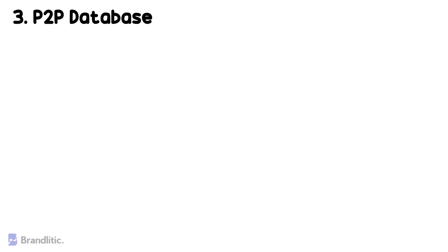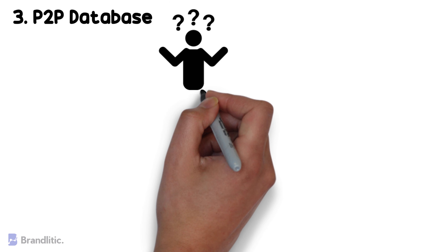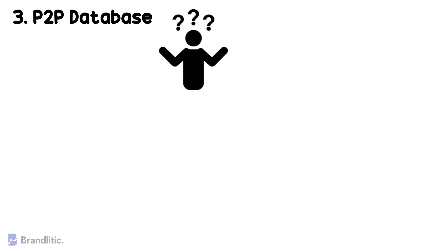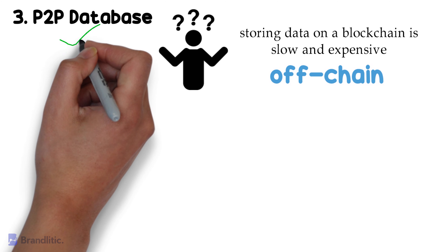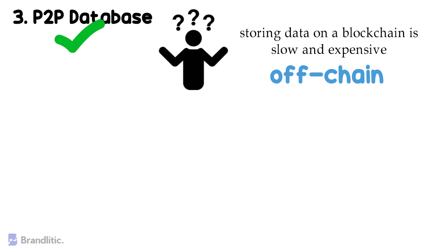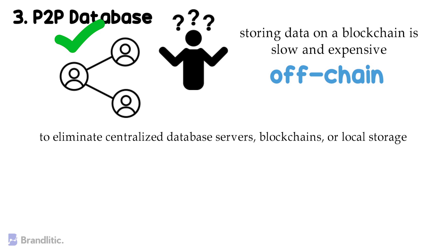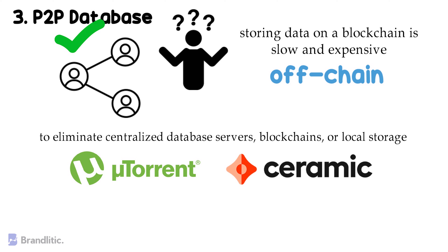Tech stack component #3: P2P Database. You might wonder why we need a database when we are using a blockchain. The simple answer is that storing data on a blockchain is slow and expensive, so we need an additional database to access data off-chain, ensuring we are not accessing the chain repeatedly. To promote decentralization, we use peer-to-peer databases that store and host data in streams, eliminating centralized database servers. Think of how torrents are downloaded. Ceramic Network is one of the most common decentralized database providers available today.